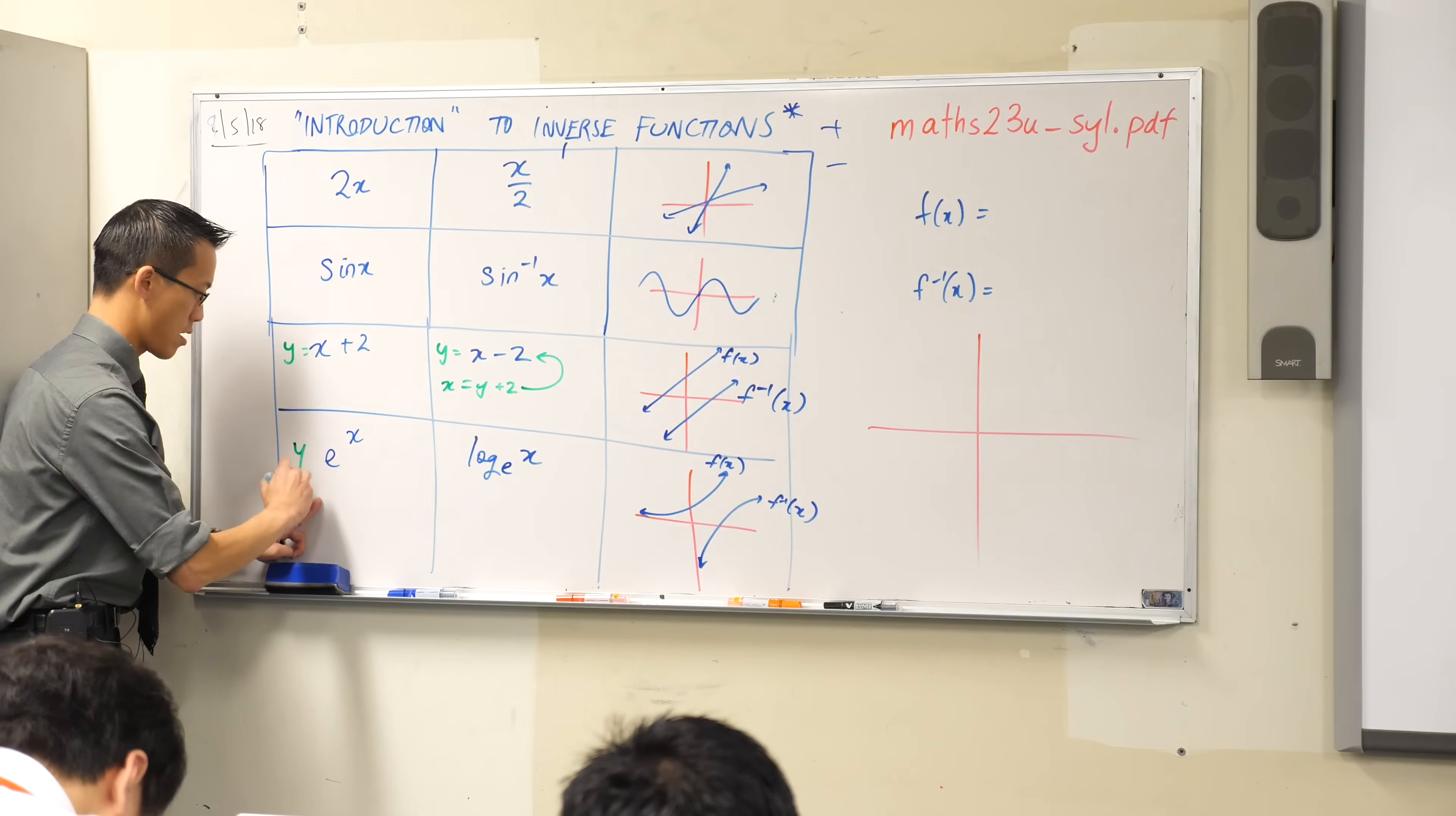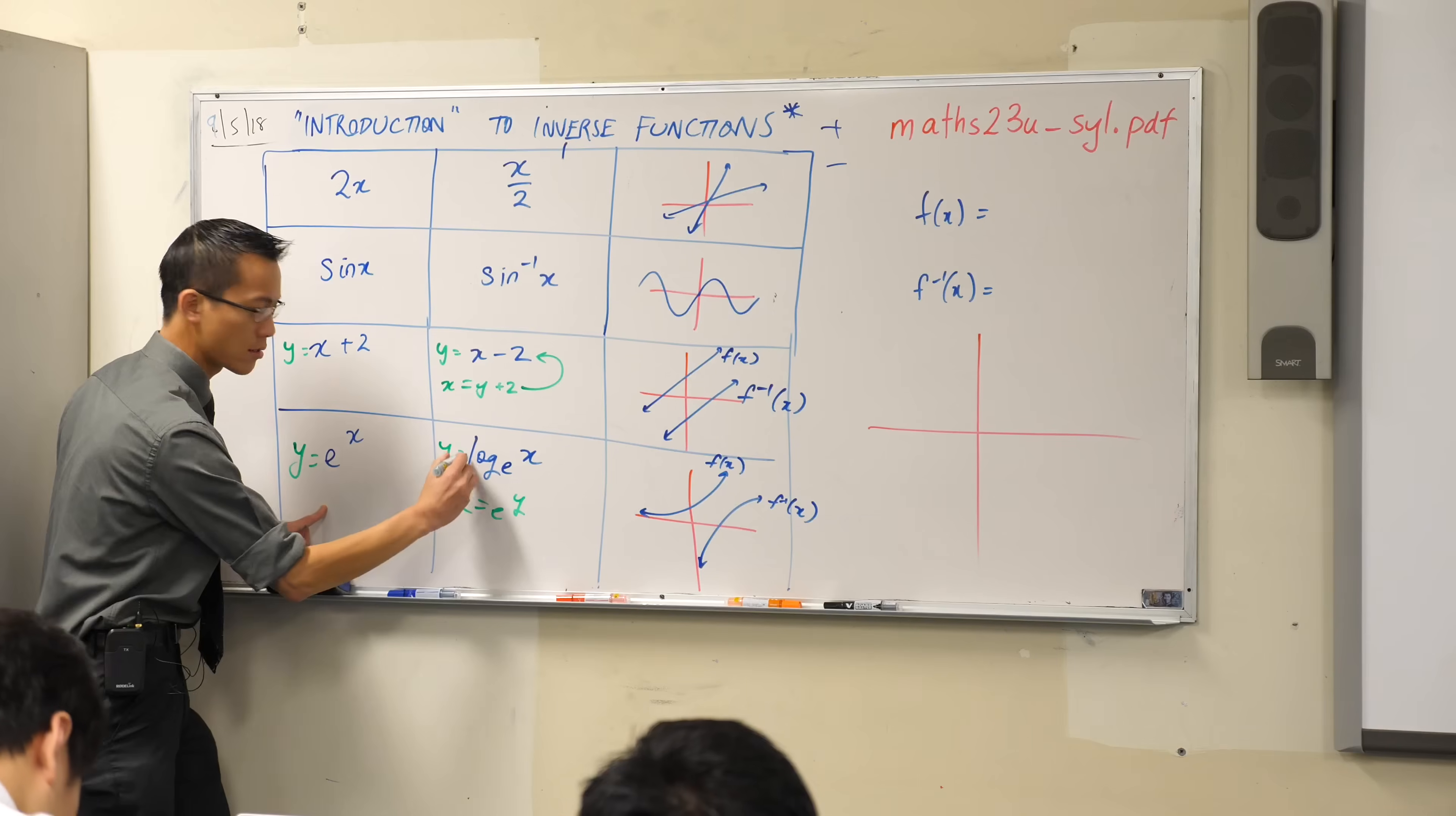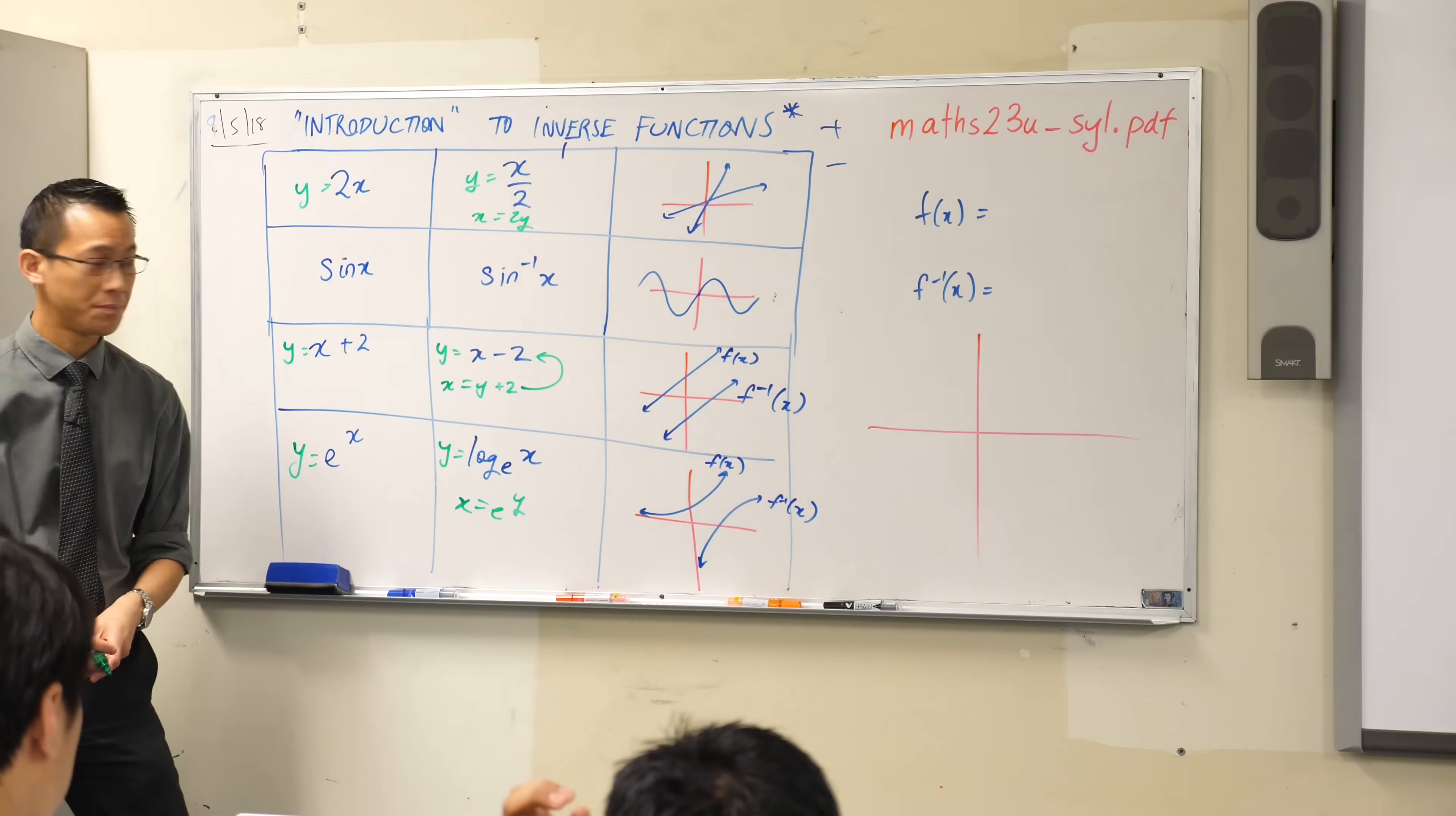How about this? y equals e to the x. What would happen when I switch the variables? Well, it'll be x equals e to the y, which by definition is the way that we would write this, right? You see, it's just the same equation. I've just rearranged it so that y is the subject. Same deal over here. y equals 2x. If I switched variables and said x equals 2y, then all I have to do is divide both sides by 2 and I get my function.